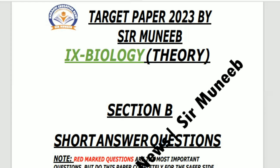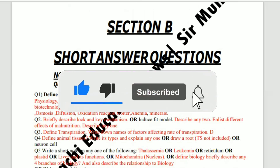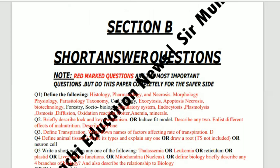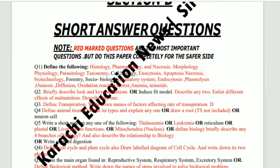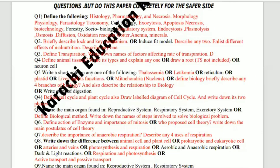I tried to solve this paper for the safer side. You have these definitions — you have to define them, describe the lock and key mechanism, and explain transpiration. Then you have animal tissues, all these motions, and all these differences.